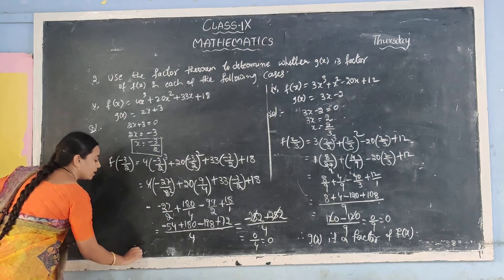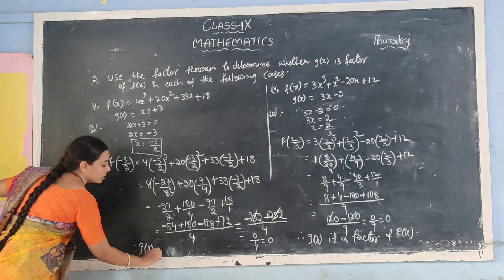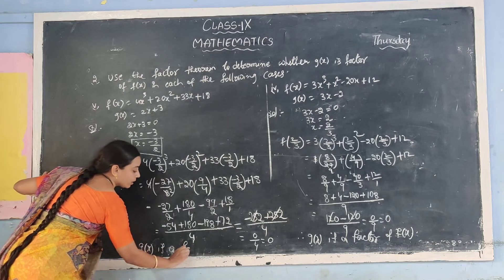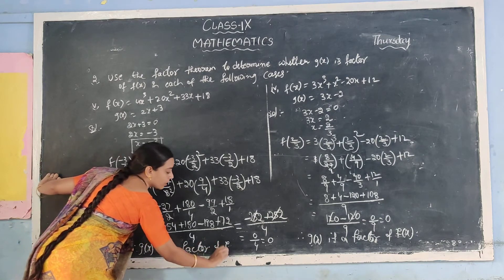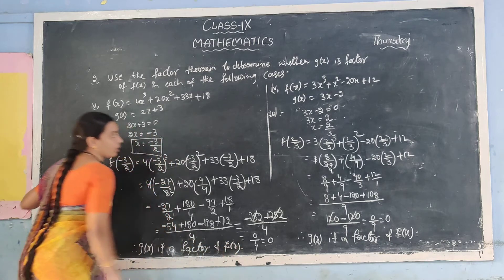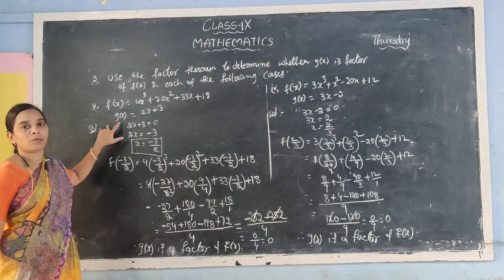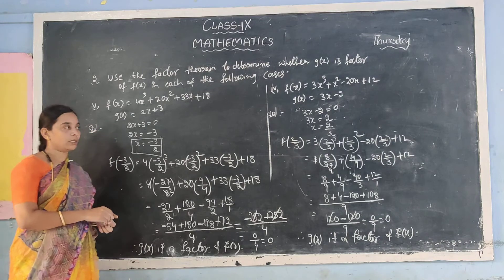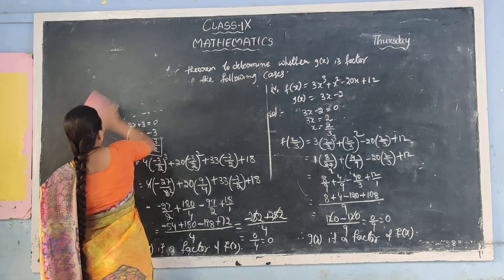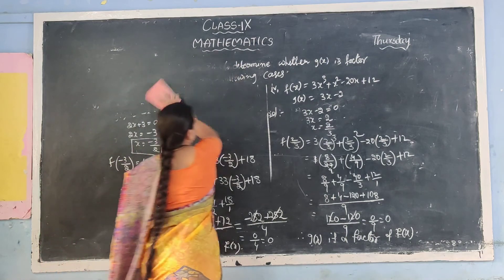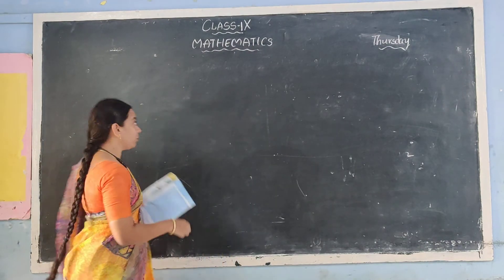Therefore, we got the answer 0, so g(x) is a factor of p(x). I have left 2 sums — second sum and third sum. Those 2 will be taken as homework. Second program finished. Now third program.